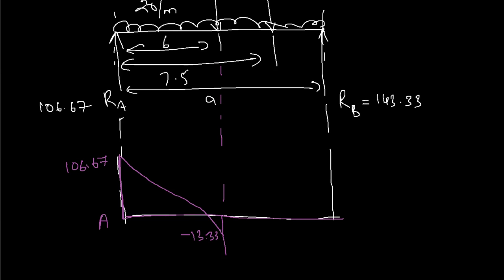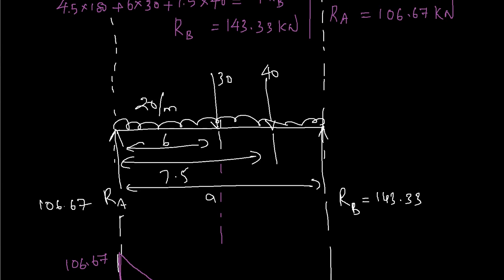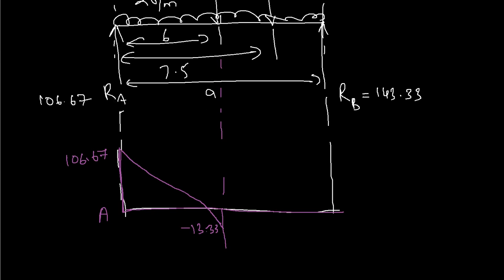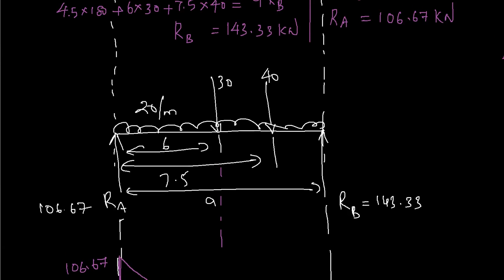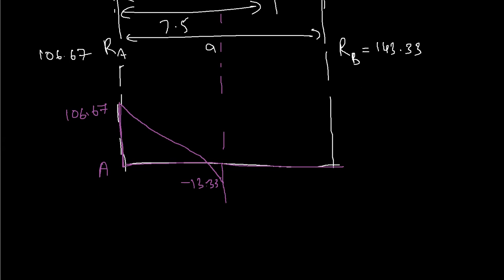That minus 13.33 comes from 120 kN acting over 6 meters at 20 kN/m, opposing the 106.67 kN reaction. Then at 6 meters there is a further 30 kN point load acting downward, so the shear force drops further: minus 13.33 minus 30 gives minus 43.33 kN.